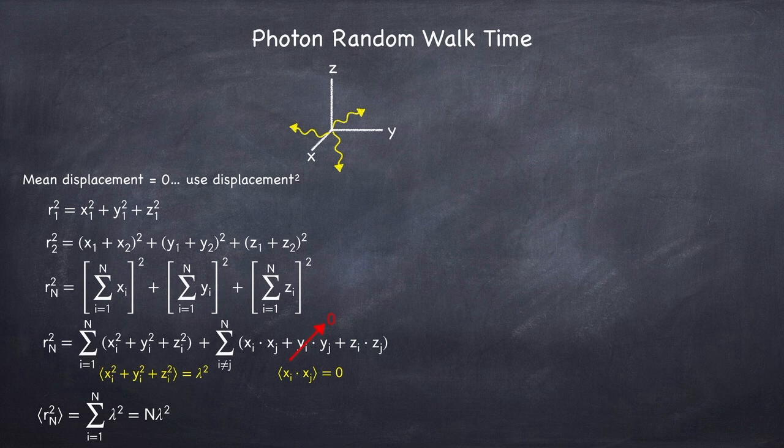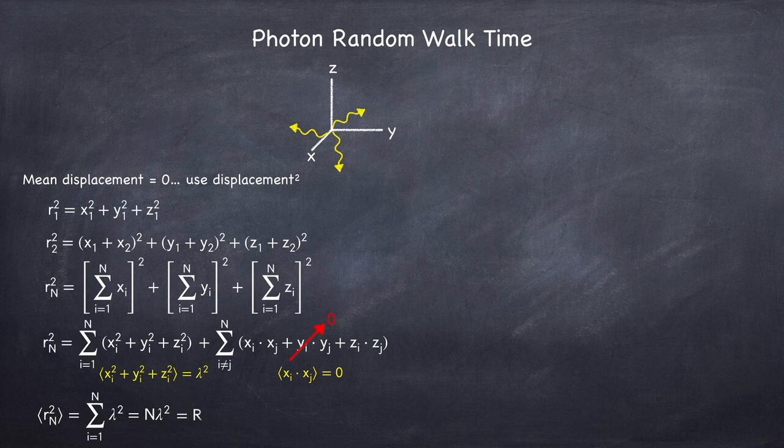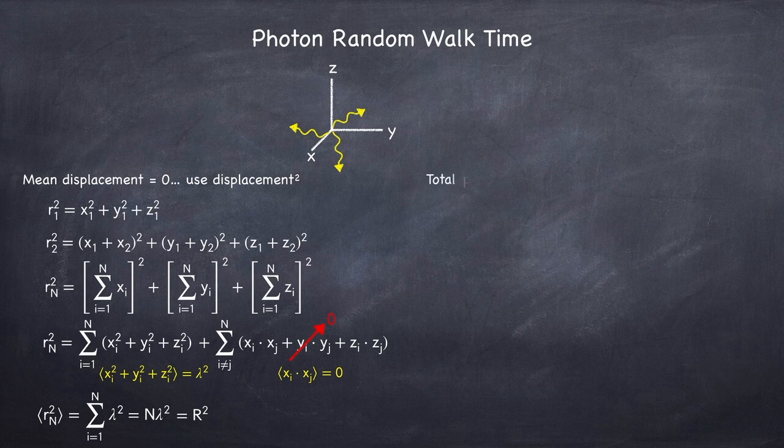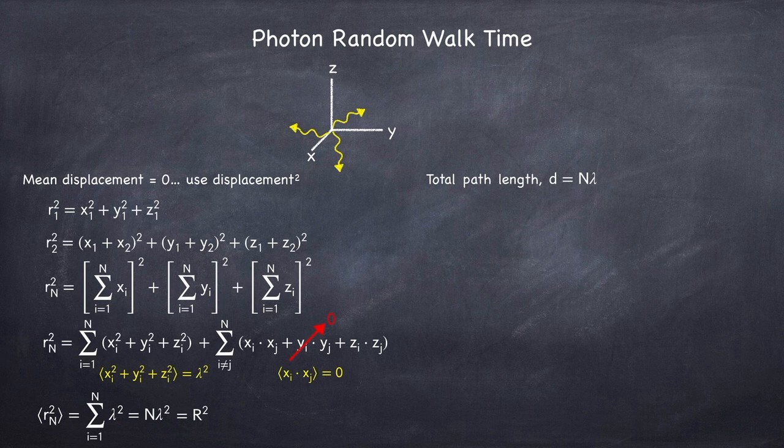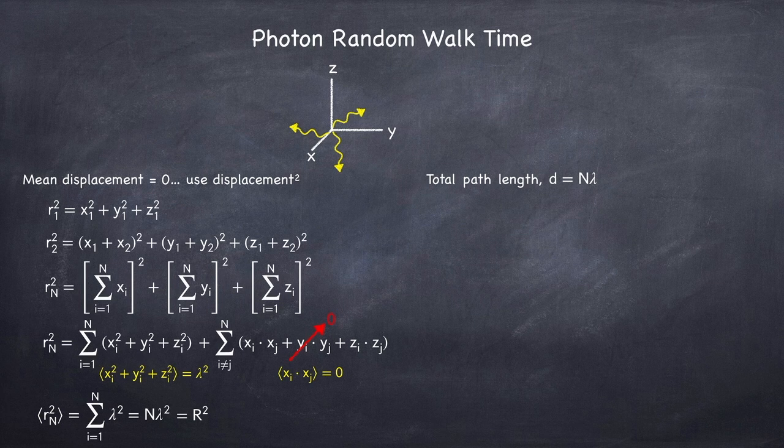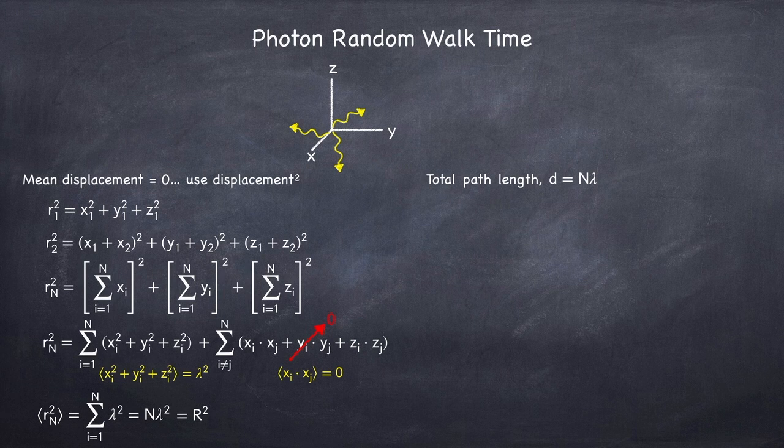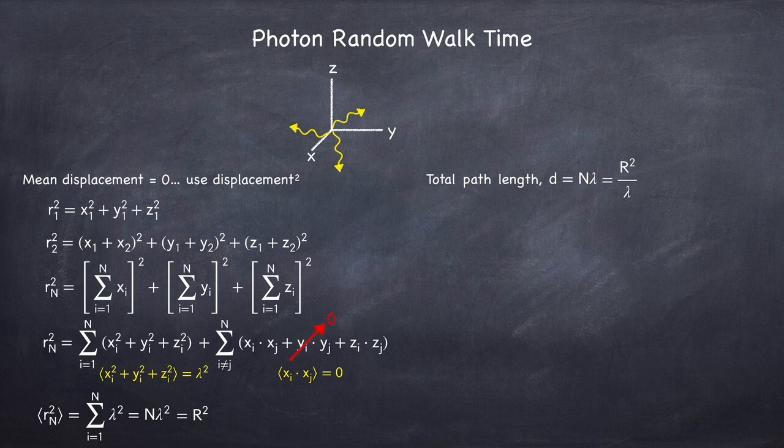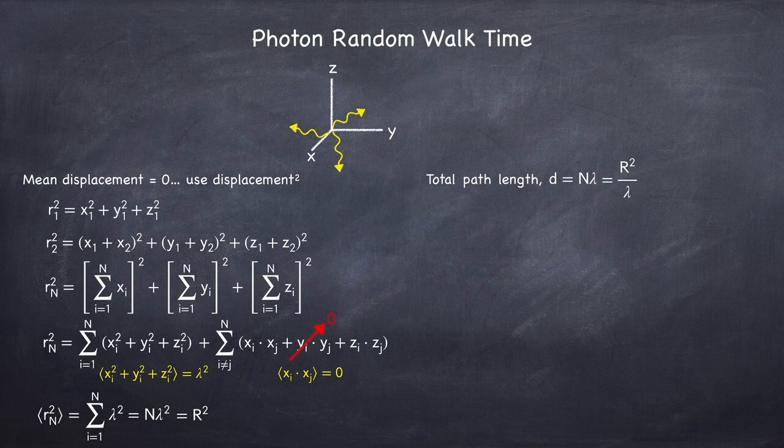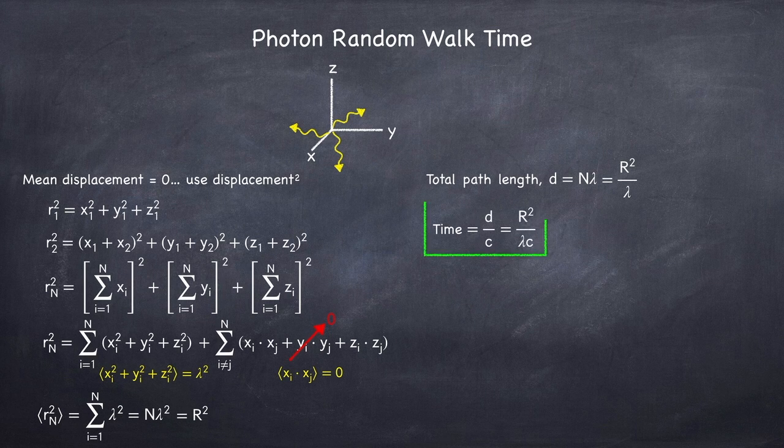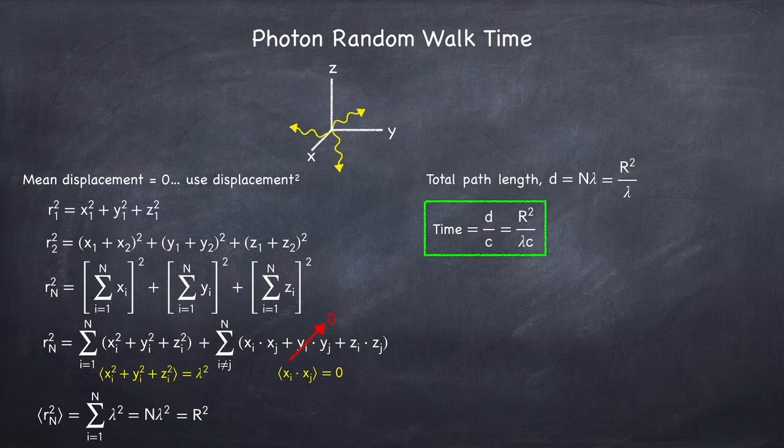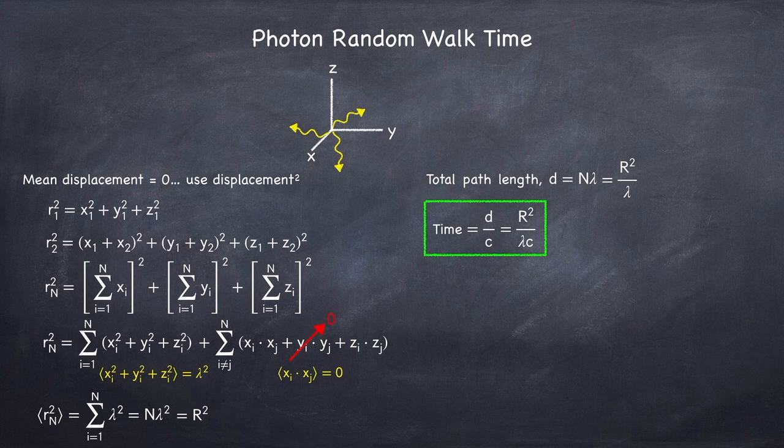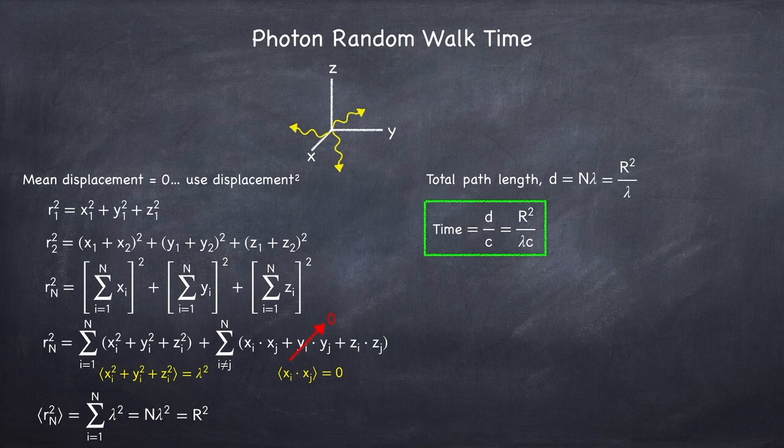Since we're going from the center of the star to its surface, we want this to equal the radius of the star squared. The total path length traveled by the photon, which I'm going to call d, will be the mean free path times the number of steps, which I'm going to rewrite as r squared divided by lambda. The time it will take for a photon to travel along this path will just be the path length divided by the speed of light. And so we have that the photon random walk time is the stellar radius squared divided by the photon mean free path divided by the speed of light.